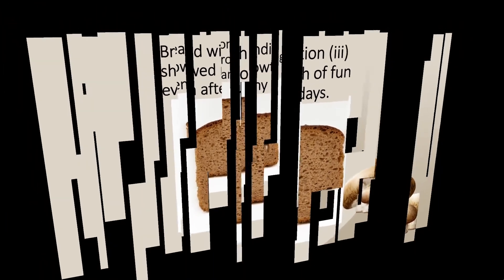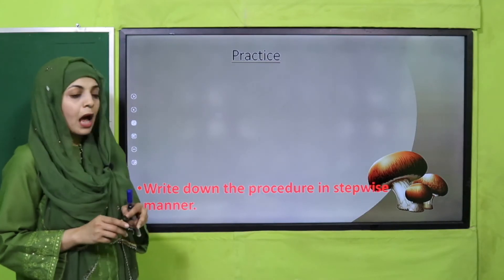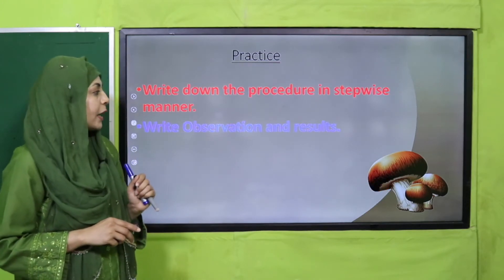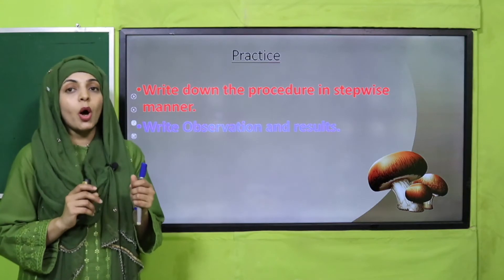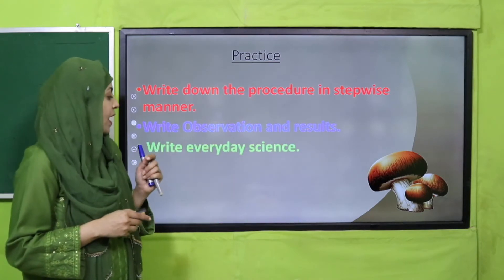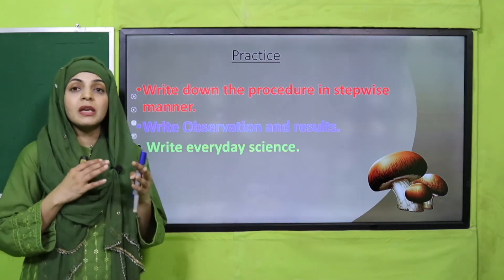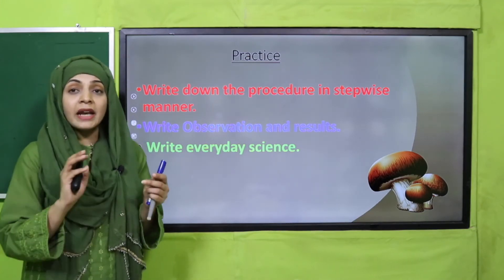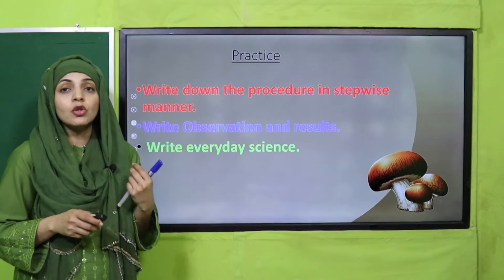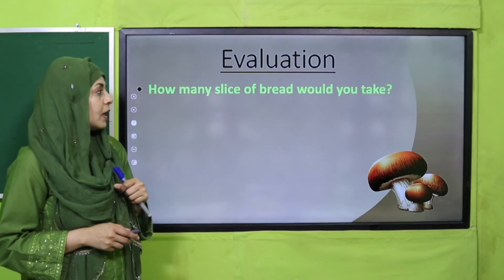For practice, perform this experiment at your homes. Write down the procedure in stepwise manner. Then write your observations and results — what you observed after a few days. Also write the everyday science section: on a daily basis we must keep edible items safe in the refrigerator, properly covered, and away from dirty places or places that may have microbes or germs.